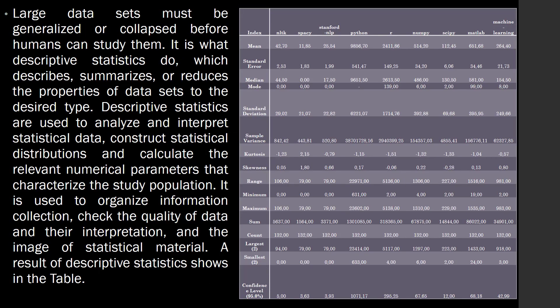Large data sets must be generalized or collapsed before humans can study them. This is what descriptive statistics does — it describes, summarizes, or reduces the properties of data sets to the desired type. Descriptive statistics are used to analyze and interpret statistical data, construct statistical distributions, and calculate the relevant numerical parameters that characterize the study population. It is used to organize information collection, check the quality of data and their interpretation, and the presentation of statistical material. The results of descriptive statistics are shown in the table.